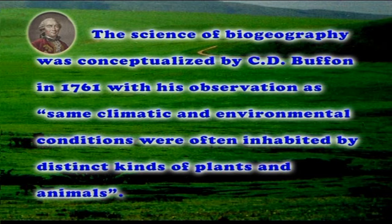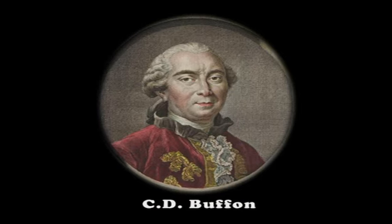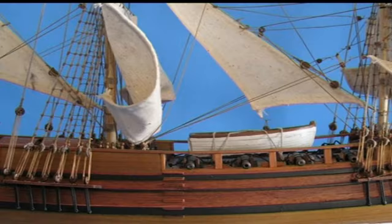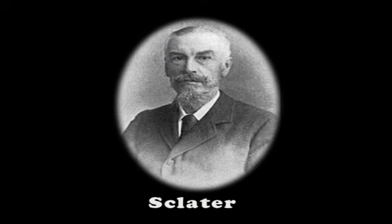Let us see the second important aspect: historical biogeography. The science of biogeography was conceptualized by Buffon, who specified that the same climatic and environmental conditions were often inhabited by distinct kinds of plants and animals. This became the first principle of biogeography, known as Buffon's Law. Charles Darwin's voyage on the HMS Beagle was instrumental in the development of his theory of natural selection and the origin of species. It was Sclater who gave the scheme of terrestrial geographic regions based on the distribution of passerine birds in the year 1858.